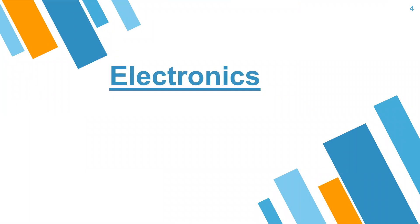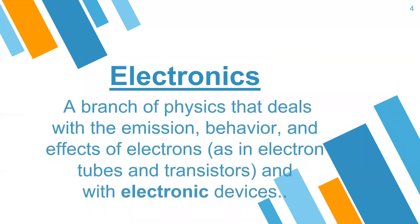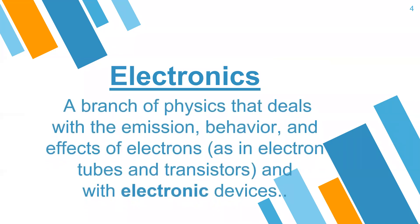Electronics. Earlier we have done the definition of electronics; now we are going to revise it. A branch of physics that deals with the emission, behavior, and effect of electrons — as in electron tubes and transistors — and with electronic devices.